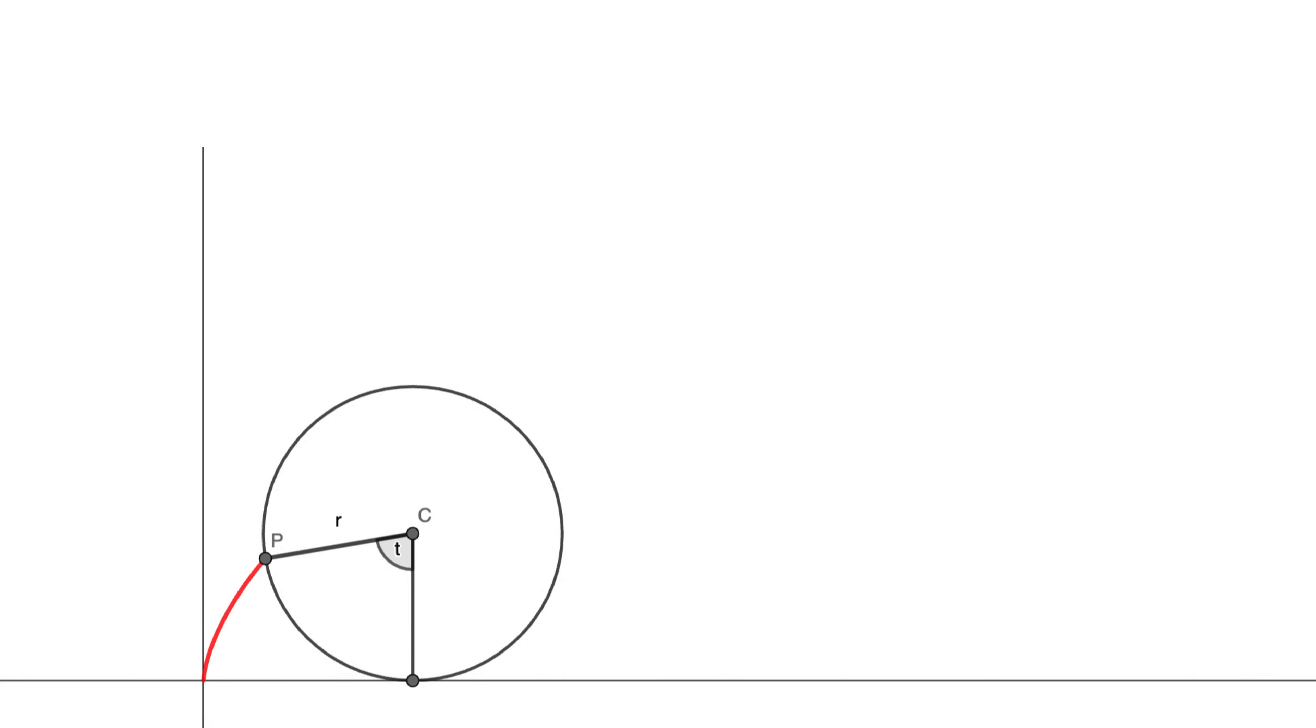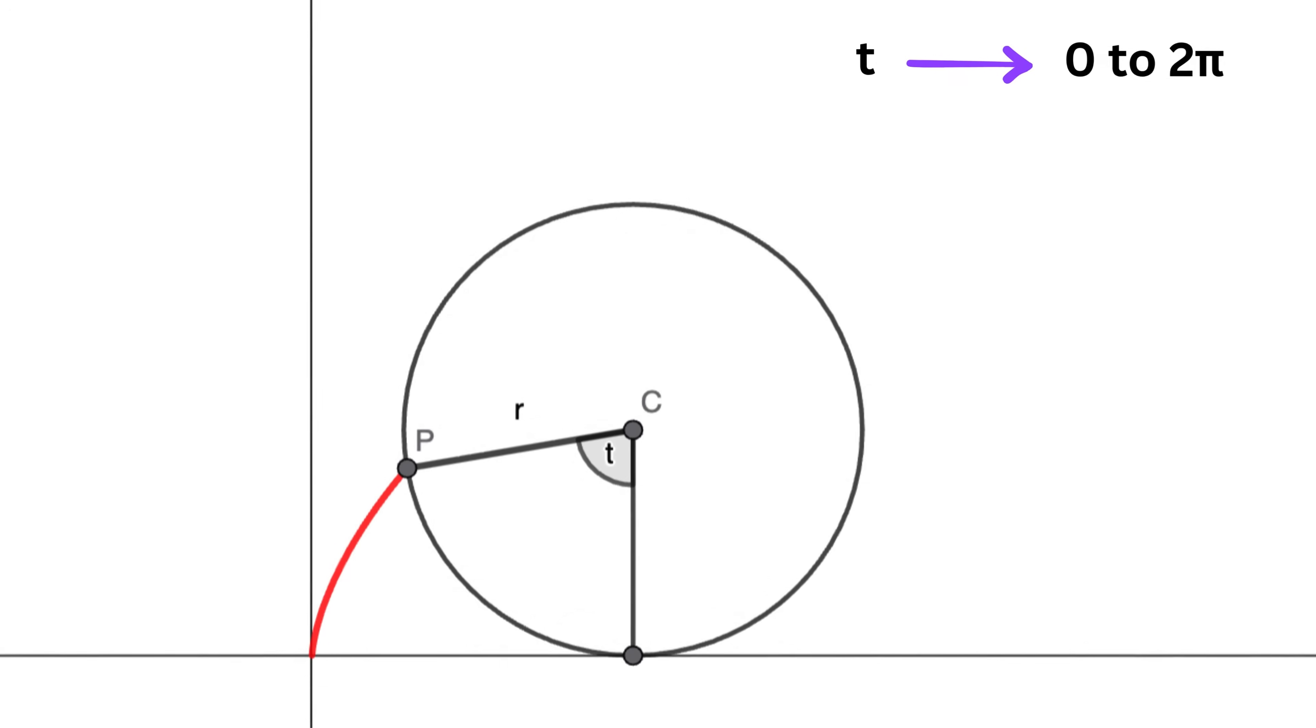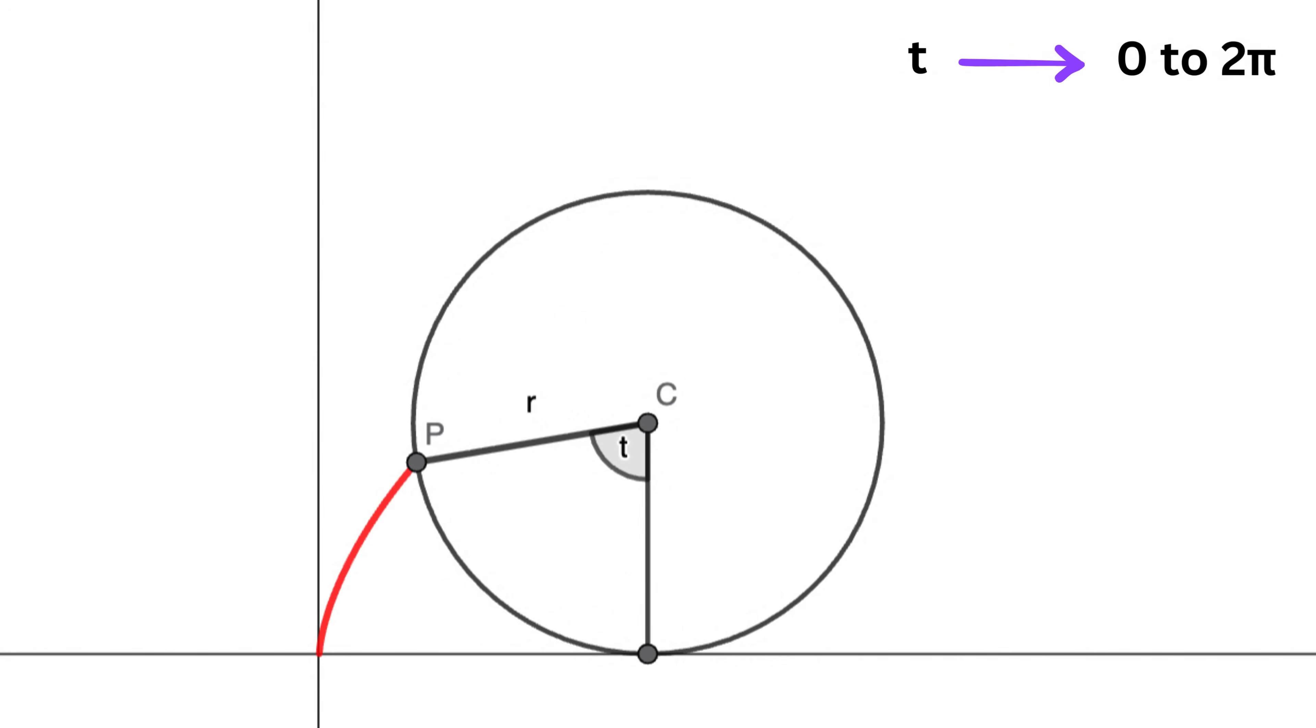As the circle rolls one full turn, T increases from 0 to 2 times pi. Two important motions happen at once. You can see that the circle's center moves forward along the straight line because